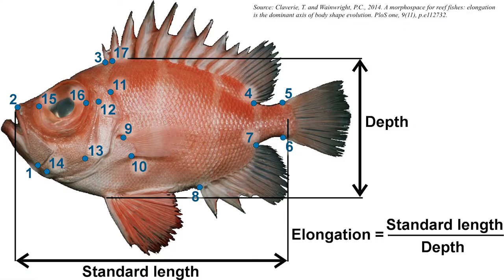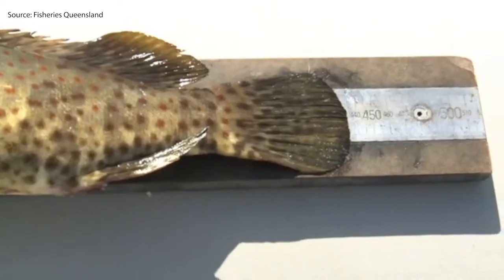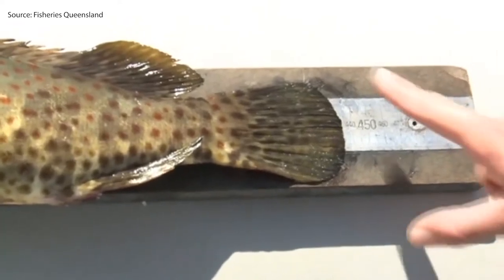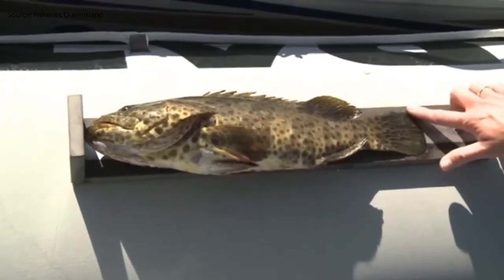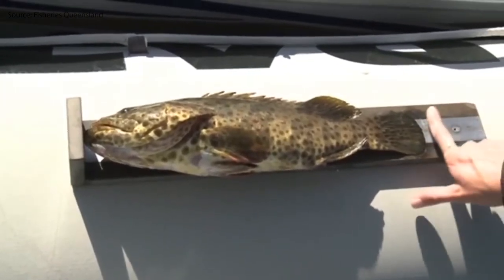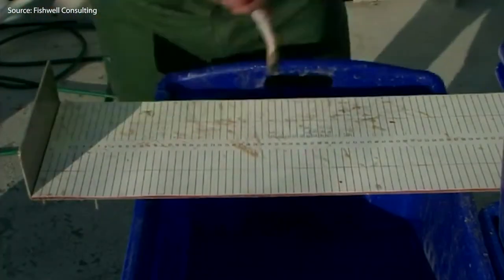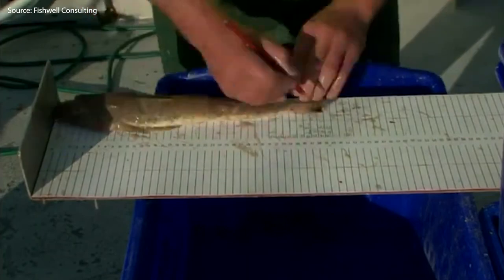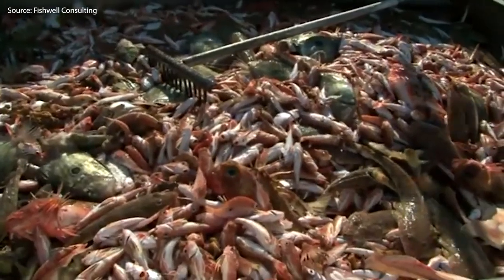Another example would be the preference of using standard length in systematic or taxonomic studies. What is common among these mentioned examples is that accurate measurement of fish lengths, even up to the smallest possible units or decimal places, are important. However, there are instances wherein greater efficiency or speed is prioritized over accuracy, such as in field sampling for stock assessment that often deals with numerous samples and typically uses class sizes to hasten the process. This also applies to weight measurements.